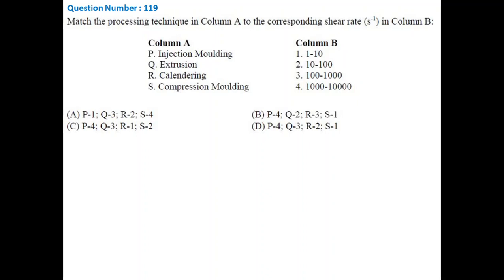On the other hand, in injection molding, polymer melts are pushed through an opening into a mold. Depending upon the injection speed and product dimension, very high shear rate is applied on the material. So the typical shear rate range for injection molding is 1000 to 10,000. So based on this information, the correct answer is D.